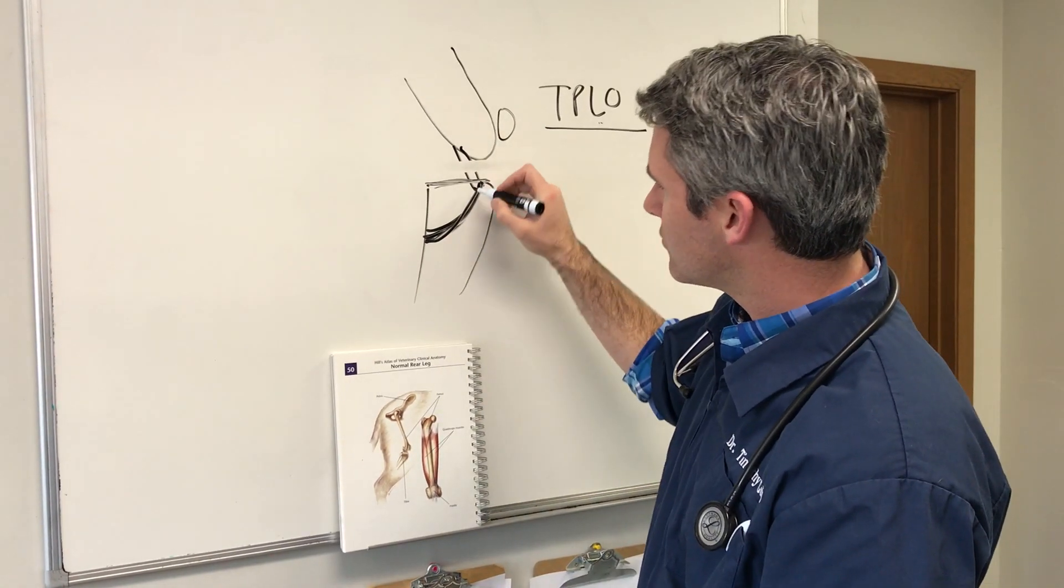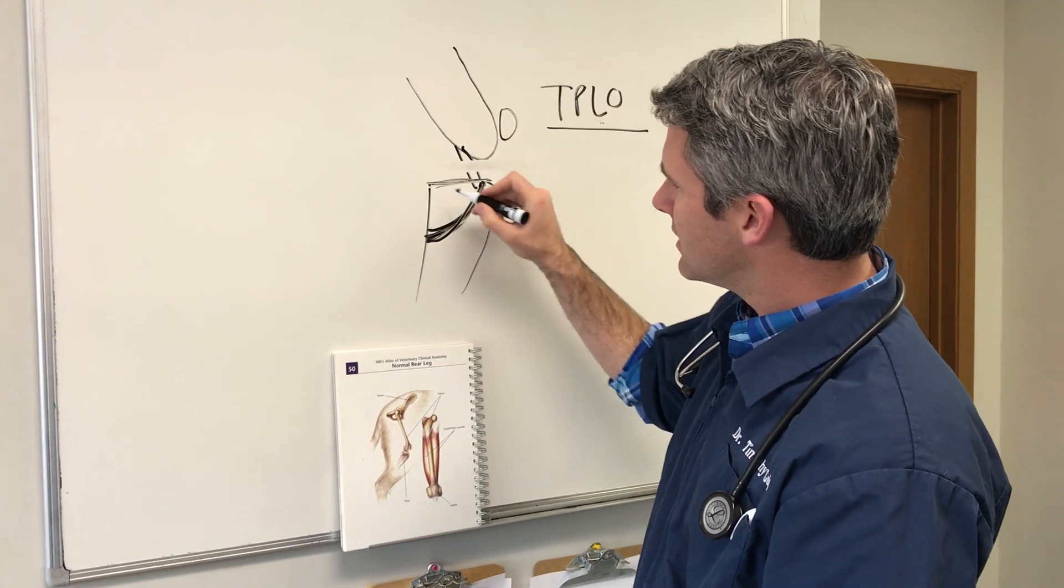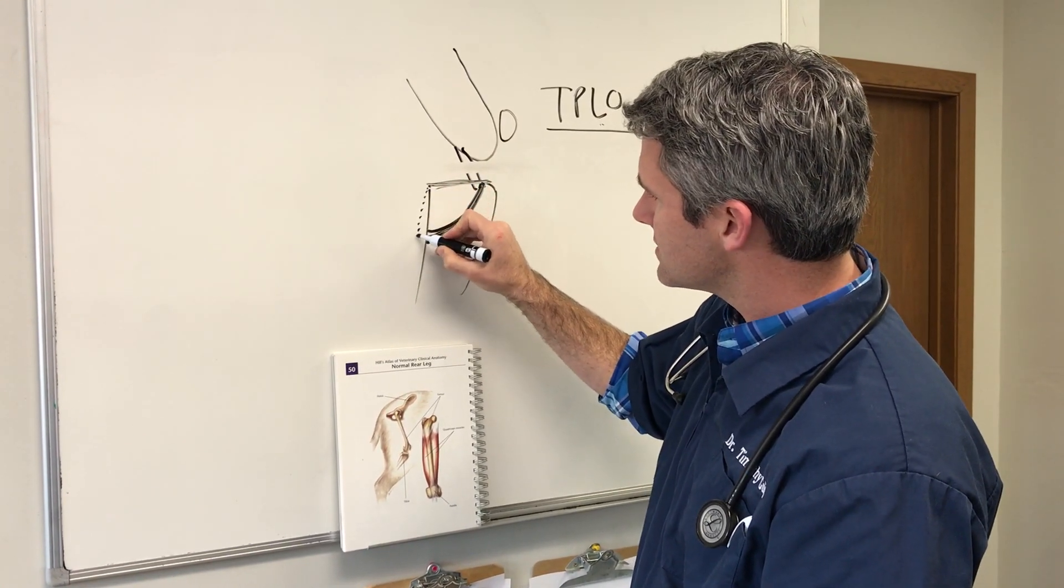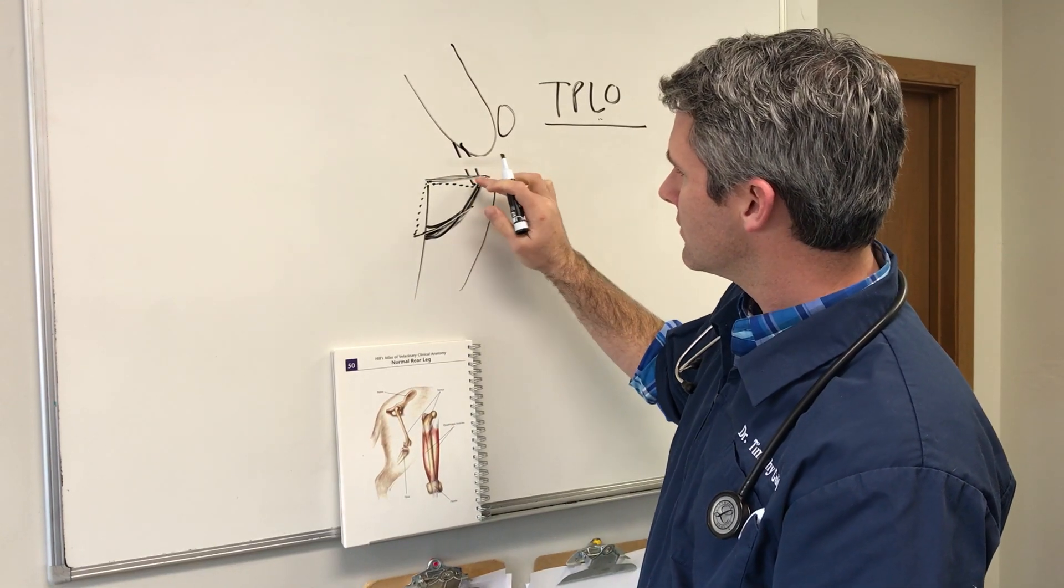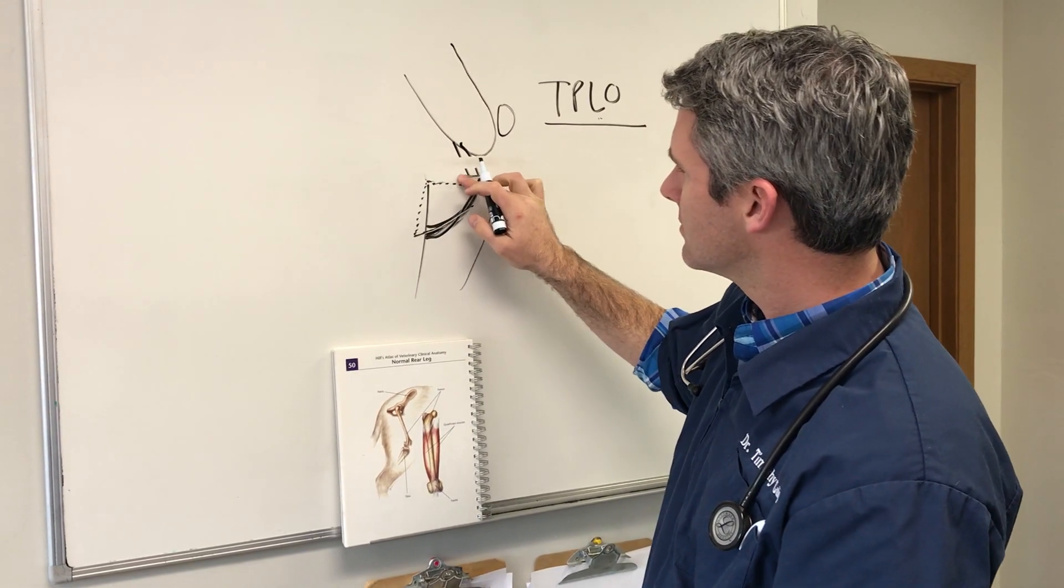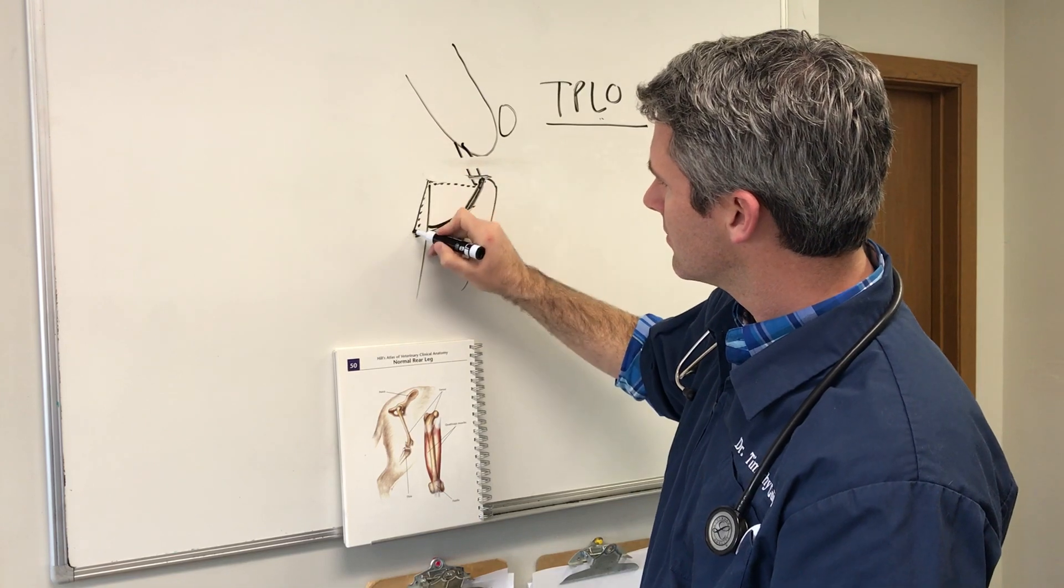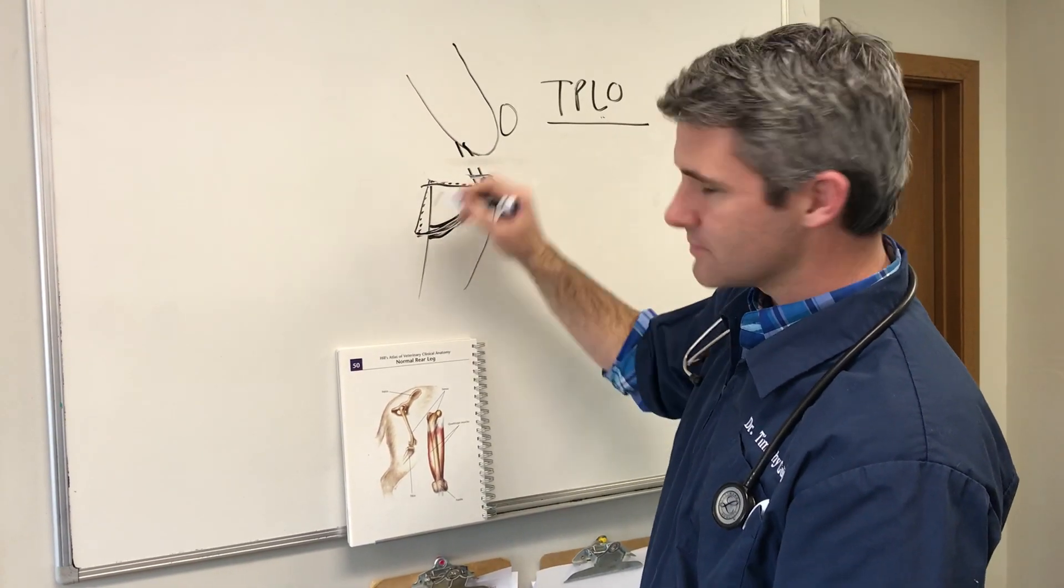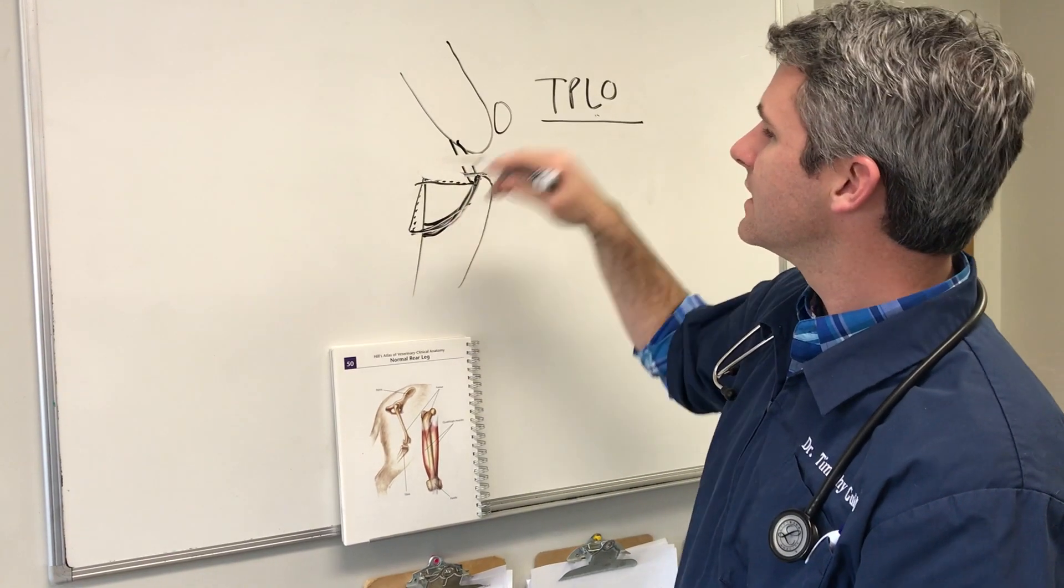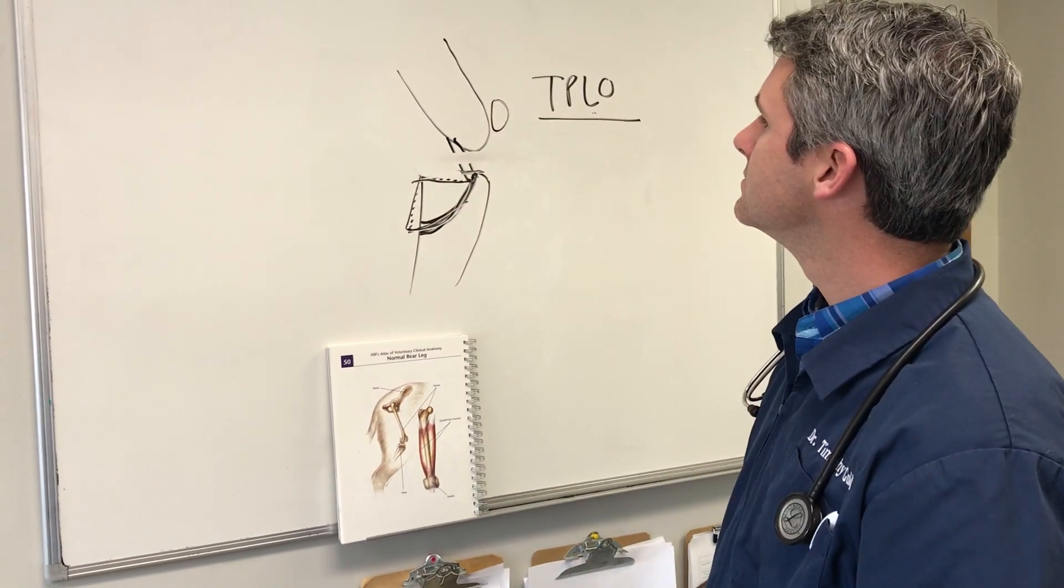This is when this bone is cut on this rotational angle. This is then rotated. It usually sits something like this. So this angle up here changes. And then there's a large plate and some screws that go into this tibia, and it sits like that.